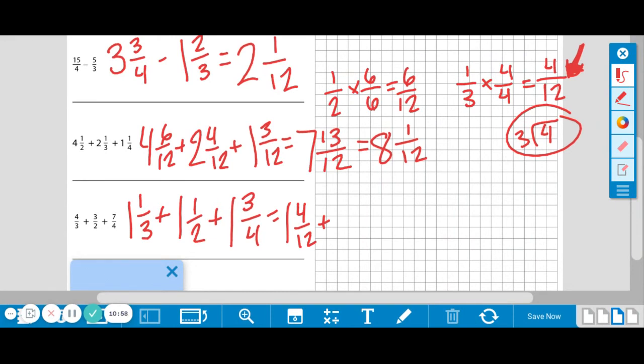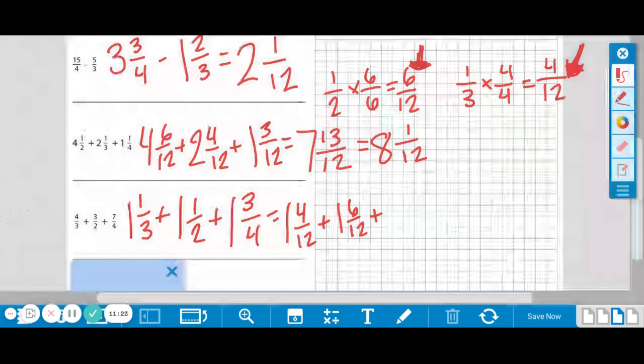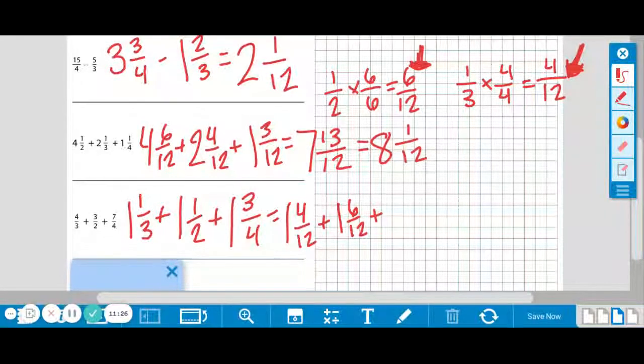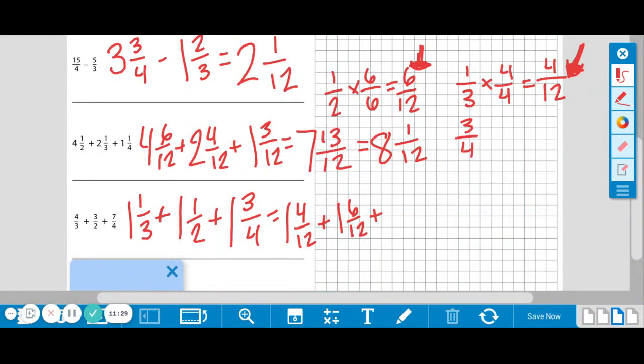Next is 1 and a half. We know a half will become 6 twelfths. So plus 1 and 6 twelfths. And this is the one that we will have to adjust: 3 fourths. We have not done this yet. So we're going to make 4s into 12ths. So 3 fourths times—and we know we're going to multiply it by 3 over 3 because we've done that earlier. So 3 times 3 is 9, and our denominator would be 12. Plus 1 and 9 twelfths.